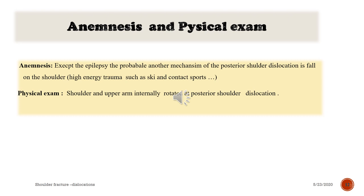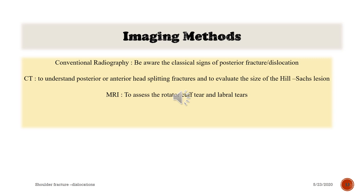Anamnesis and physical examination of posterior shoulder dislocation. Apart from epilepsy, another probable mechanism is fall on the shoulder or high-energy trauma such as skiing or contact sports. On physical examination, the shoulder and upper arm are internally rotated. If the arm appears to be in internal rotation, suspect posterior shoulder dislocation.